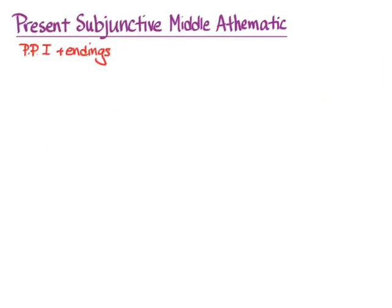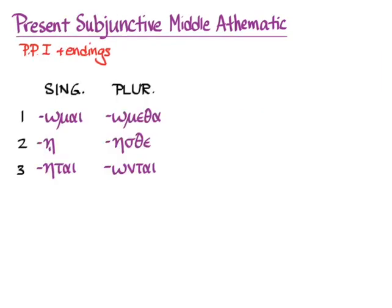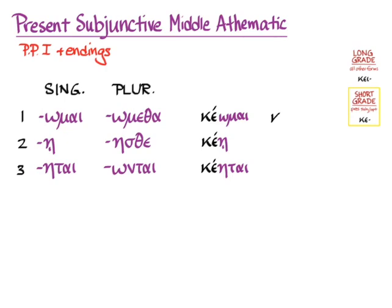For the subjunctive, the endings that we know, the middle endings that we know for this deponent verb, but now we have the short grade because we're going to do the present subjunctive. And it doesn't contract with these endings. We simply get κέωμαι, κέῃ, κέηται, κεώμεθα, κέησθε, and κέωνται.